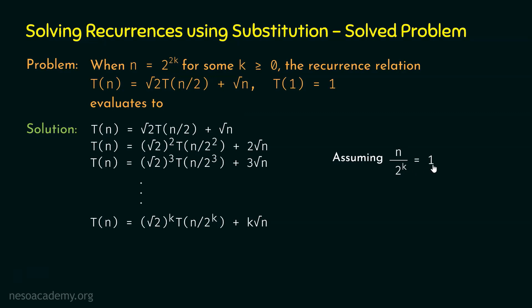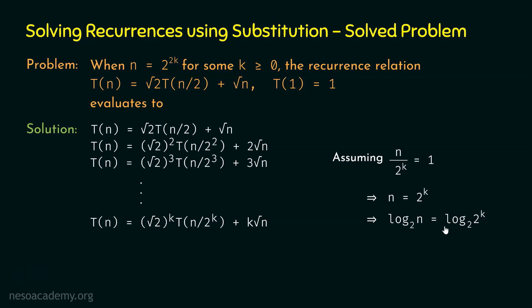From n = 2^k, taking log base 2 on both sides: log₂(n) = log₂(2^k) = k·log₂(2) = k·1 = k. Therefore k = log₂(n).